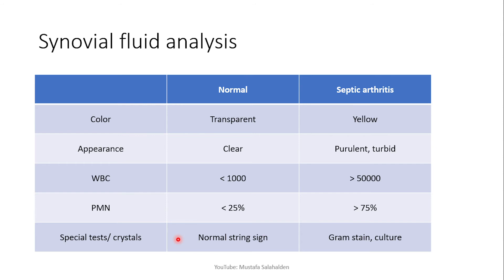You can assume the patient has septic arthritis just by looking at the synovial fluid — if it is purulent, turbid, and yellowish, that is strongly suggestive. You want to first send a specimen for analysis, and then give the patient IV antibiotics directly without waiting.